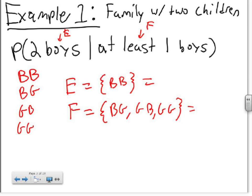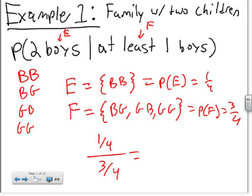We now know that the probability of E is one-fourth, the probability of F is three-fourths. So now simply filling in the formula, we know that the probability of two boys given at least one boy already is one-fourth over three-fourths, which equals one-third.